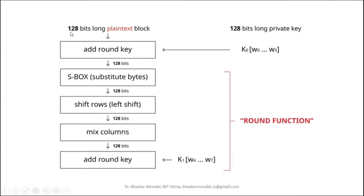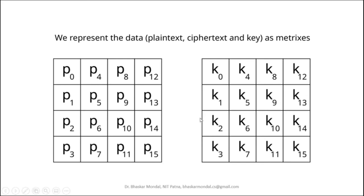The 128-bit plaintext block is entered along with the 128-bit private key, then Add Round Key XORs them. Within each round — shown by the red bracket — the operations are: S-box first, then Shift Row, then Mix Column, then Add Round Key again. There is no splitting into left-right as in Feistel ciphers.